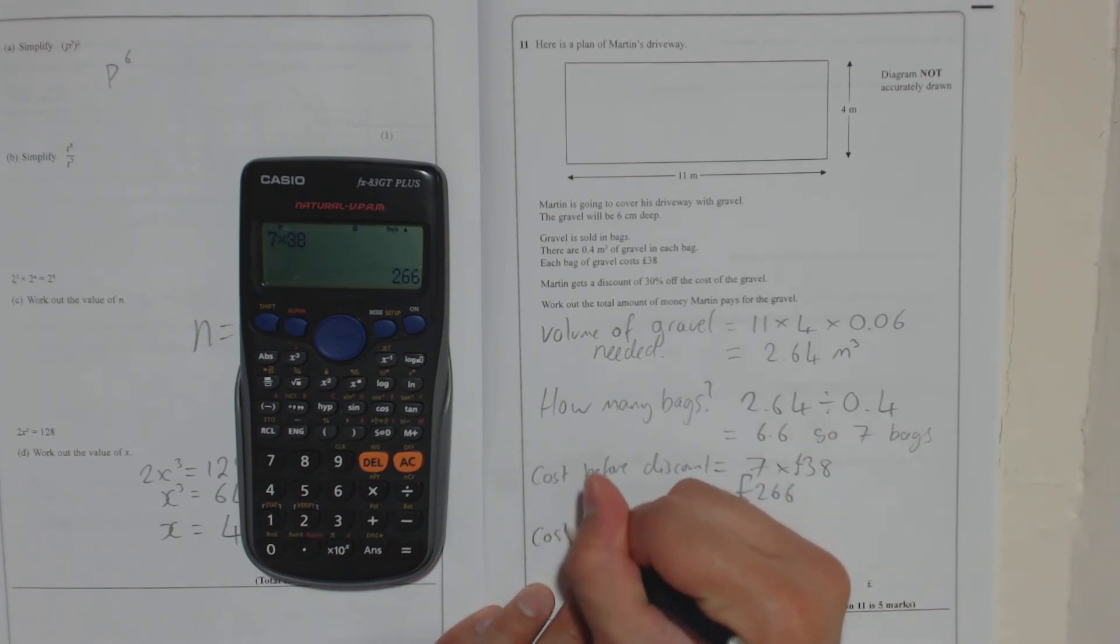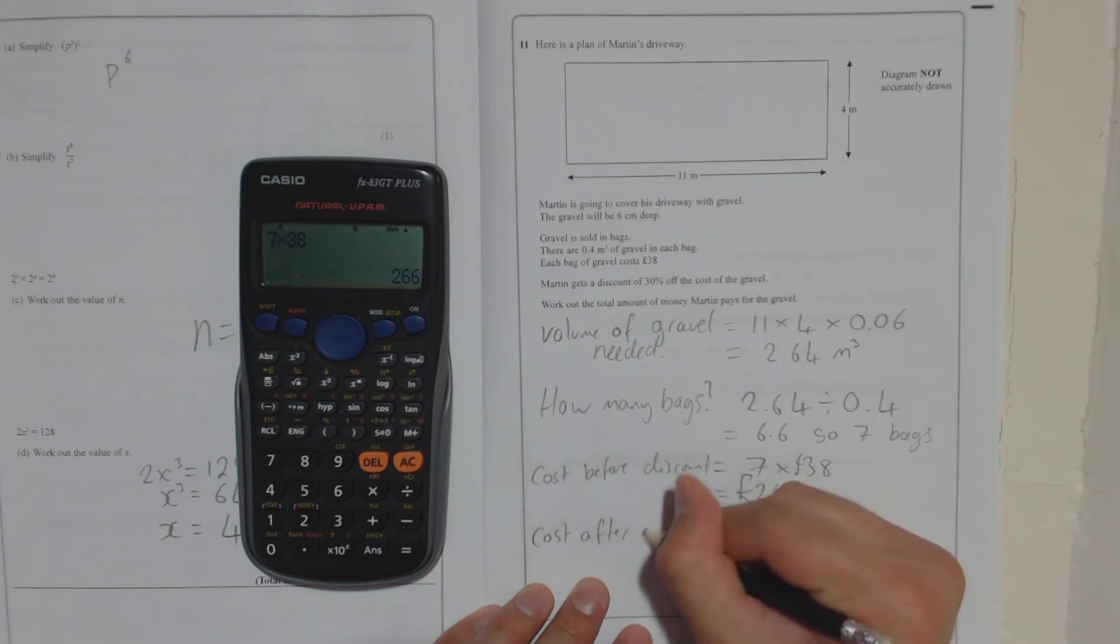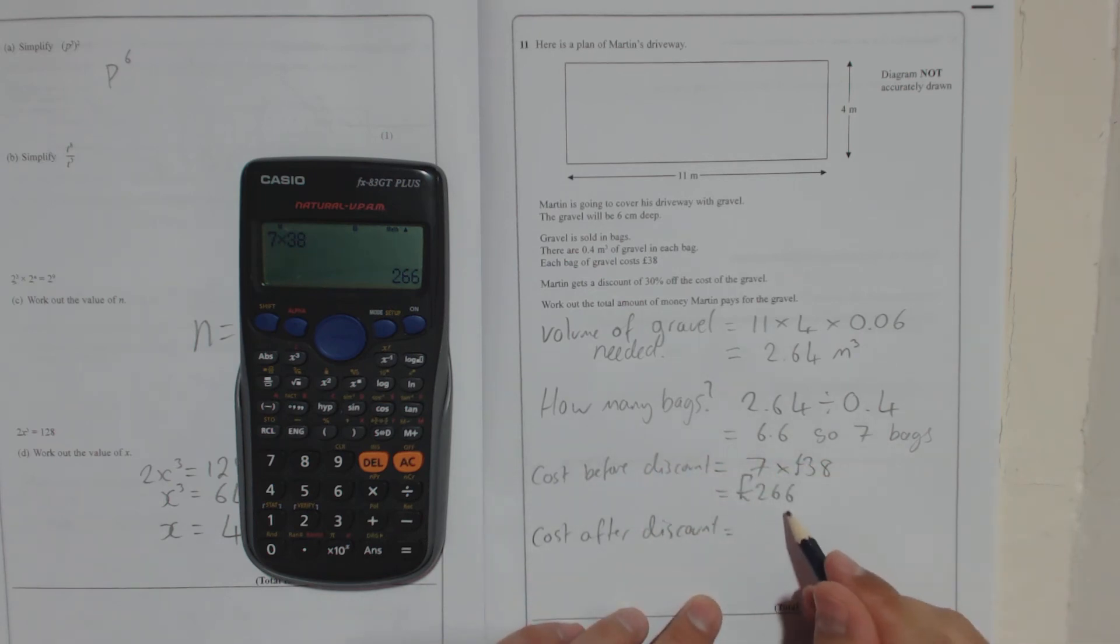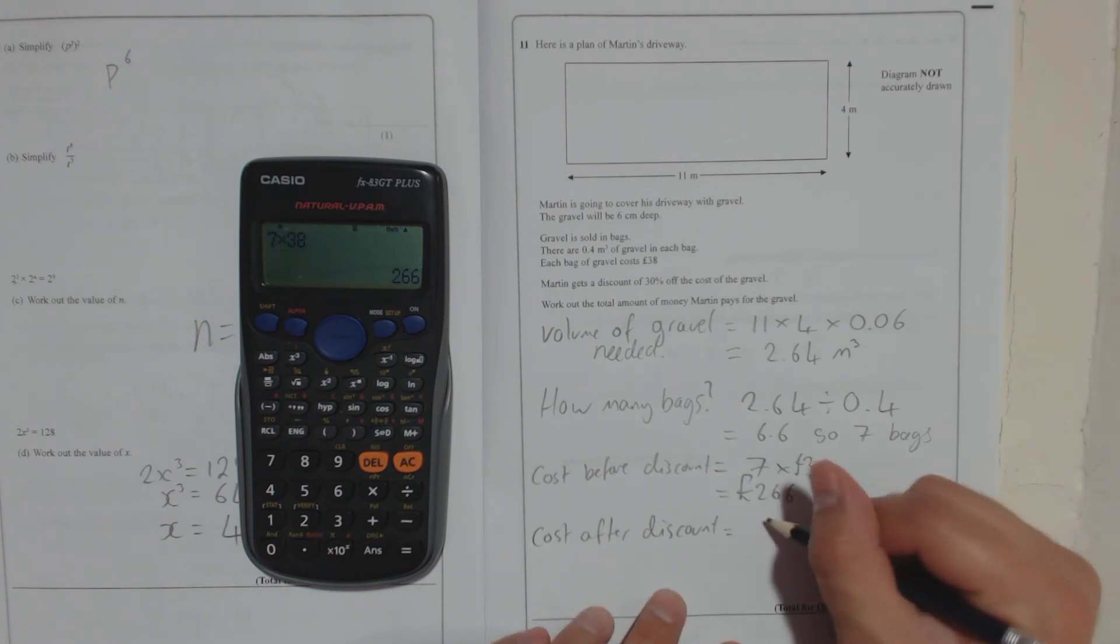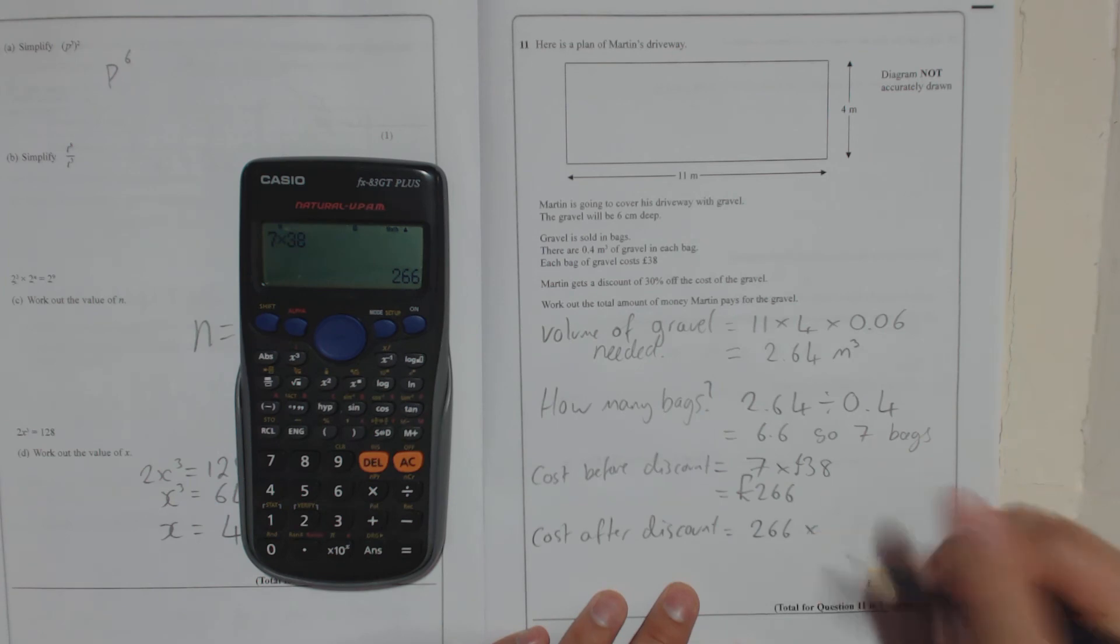So now the cost after discount. So it costs £266, he's going to get 30% off. So the easiest way to do that is take 266 and times it by, because he's going to get 30% off, he has to pay 70% of the cost and to find 70% you do 0.7.